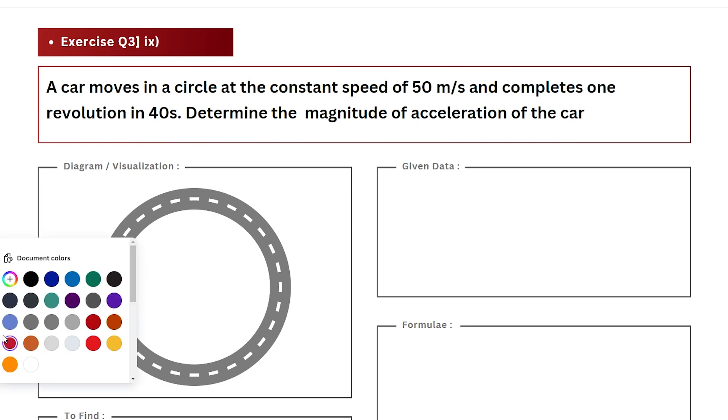The question also tells us that the car is moving along a circular path. So let's understand how this is possible.